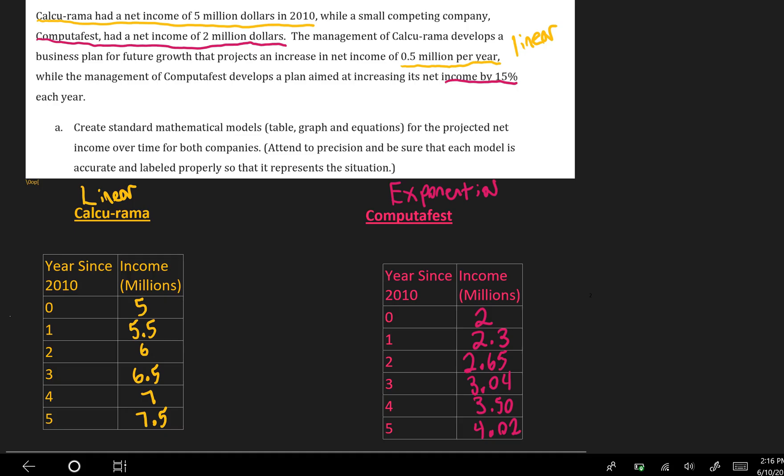The rule that I used to fill in the table for Calcurama was a recursive rule. So I was looking at, let's use t for years, and I'm going to use i for income. So we were looking at i sub t equals i sub t minus 1 plus 0.5. And that was starting from i sub 0 being 5. On the other hand, filling in the table for computafest, we have time and income. I was using a recursive rule i sub t equals i sub t minus 1 times 1.15 starting at 2.